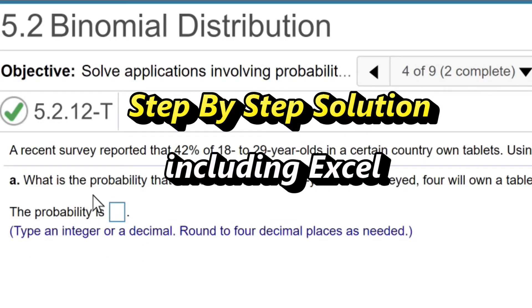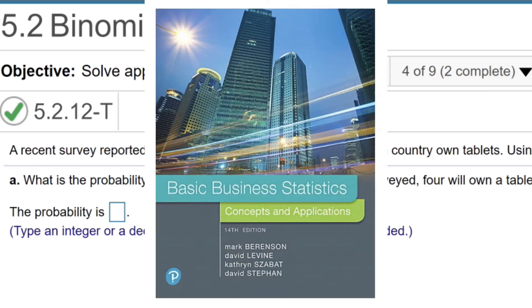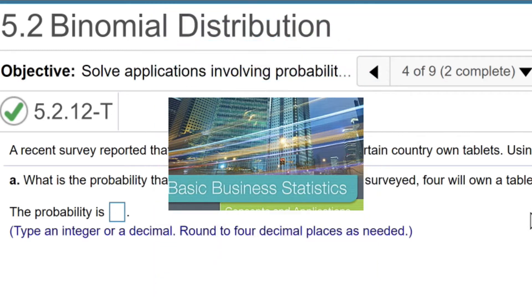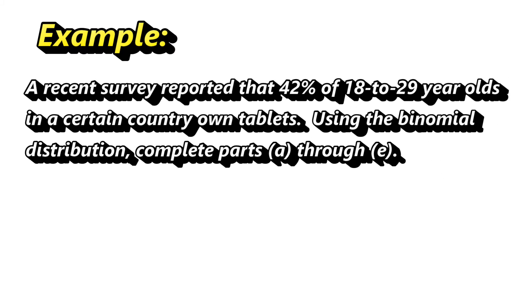In this video, I'll show you how to solve a typical binomial distribution problem. This problem is from the MyLab statistics program that comes with the basic business statistics textbook. Here is the problem: a recent survey reported that 42% of 18 to 29 year olds in a certain country own tablets. Using the binomial distribution, complete parts A through E below.